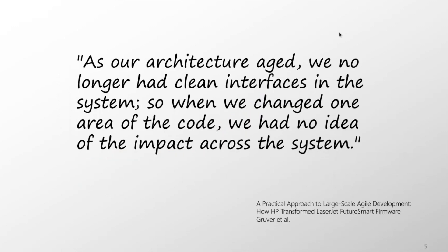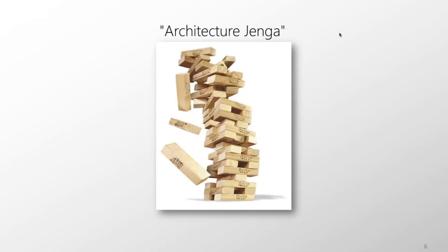A great example comes from a book by Groover's team at HP called 'A Practical Approach to Large-Scale Agile Development.' The quote reads: 'As our architecture aged we no longer had clean interfaces in the system, so when we changed one area of the code we had no idea of the impact across the system.' We call this Architecture Jenga. When you first build the project, the tower of bricks is solid and robust, and modifications are easy. But every time you move a brick it subtly changes the balance of the system.